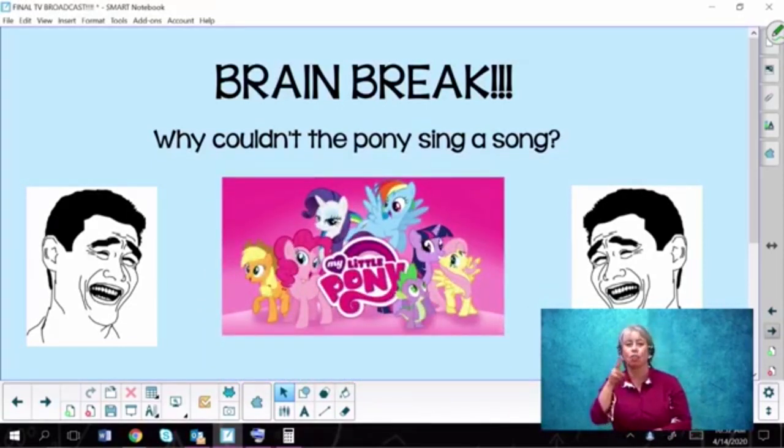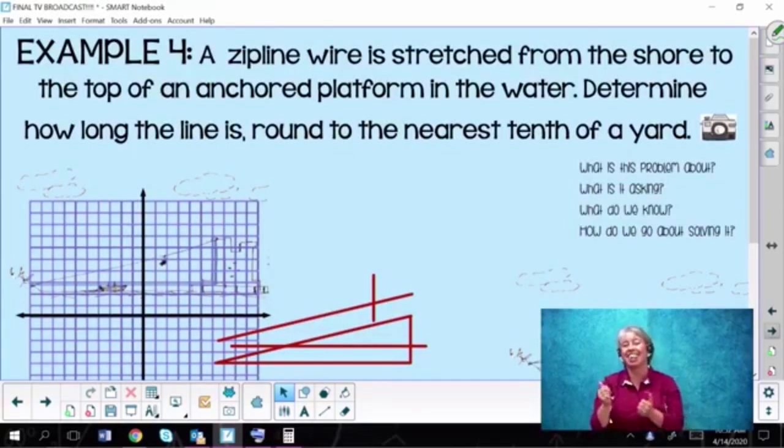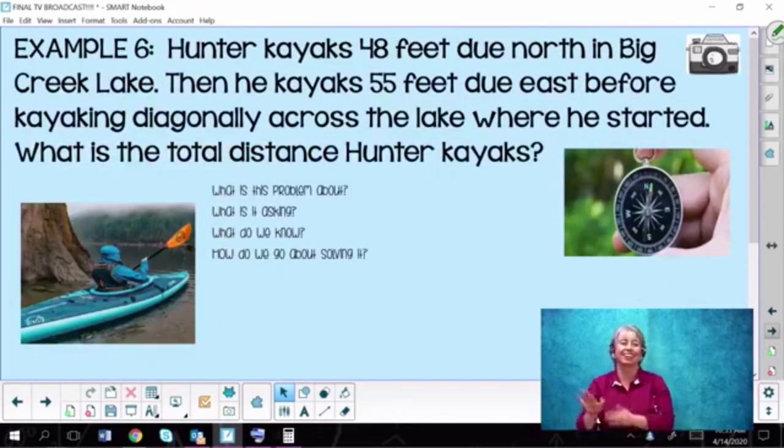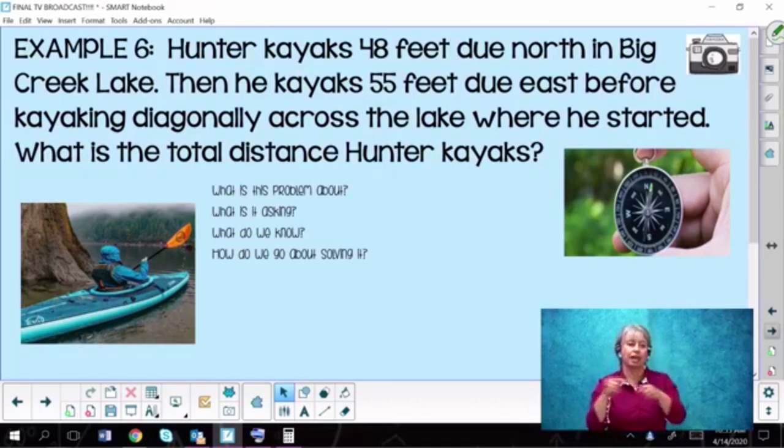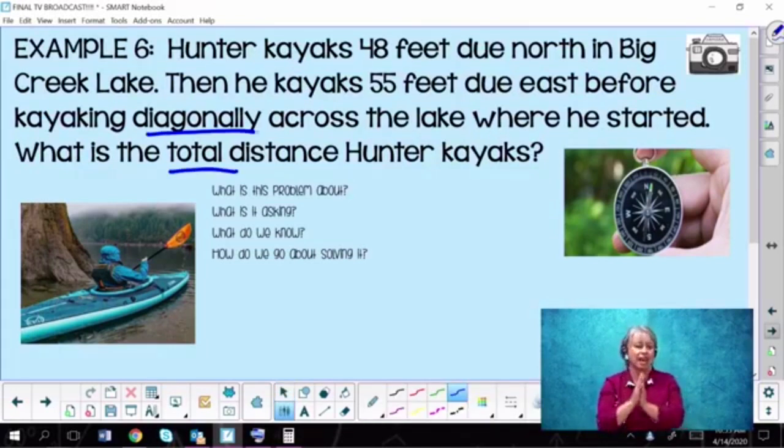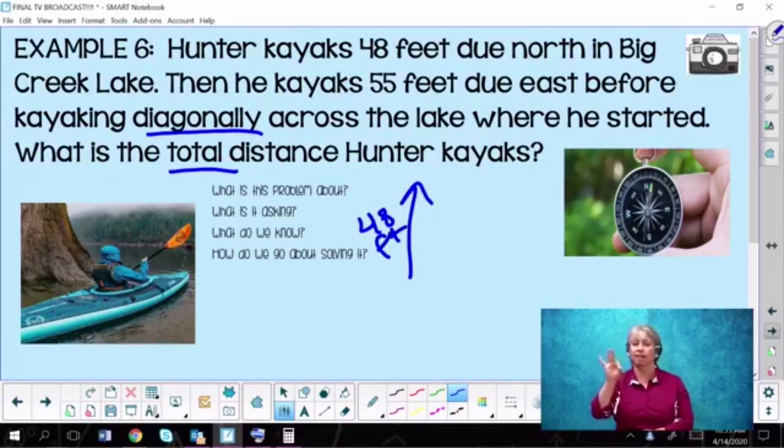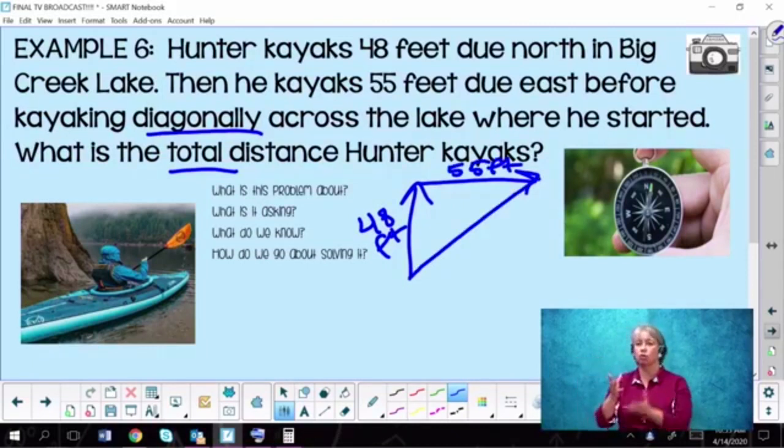Let's go to this example as our last one. Hunter kayaks 48 feet due north in Big Creek Lake. Then he kayaks 55 feet due east before kayaking diagonally across the lake where he started. What is the total distance he kayaks? So what is this problem about? Kayaking in Big Creek Lake. What is it asking for us to find the total amount? But we also need to find how much diagonally. So here we go. Due north would be 48 feet. And if we are going due east, that would be 55 feet. We want to find what it would be diagonally.